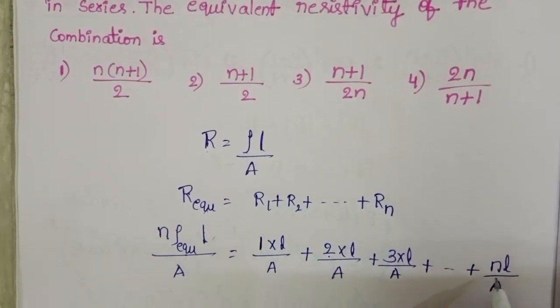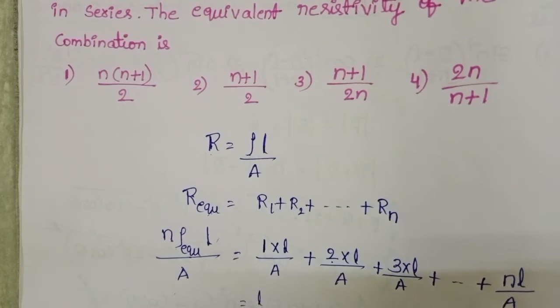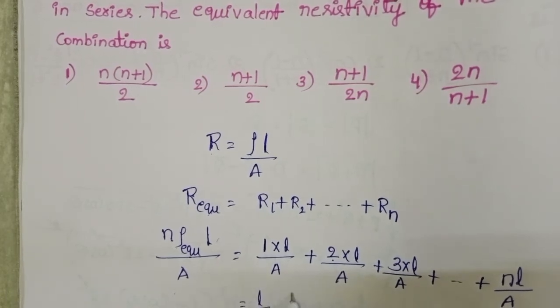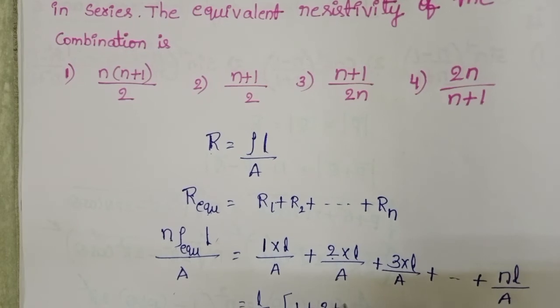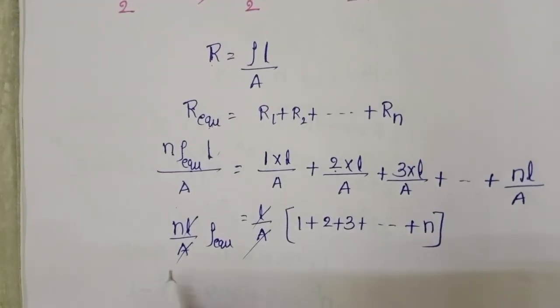So take L by A common, L by A into 1 plus 2 plus 3 plus, L by A get cancelled.